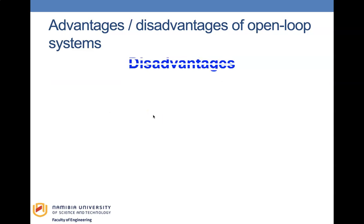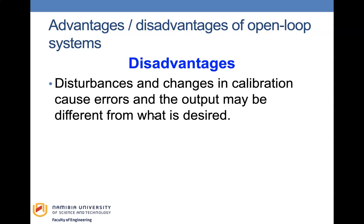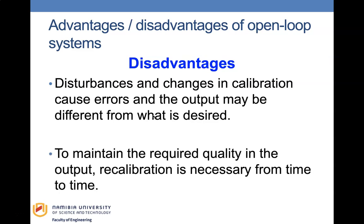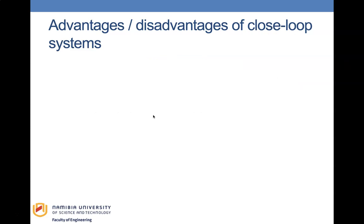The disadvantages of open loop systems are that when there is a disturbance or changes in calibration, it causes errors and the output may be different from what is desired. To maintain the required quality in the output, recalibration is always necessary from time to time.